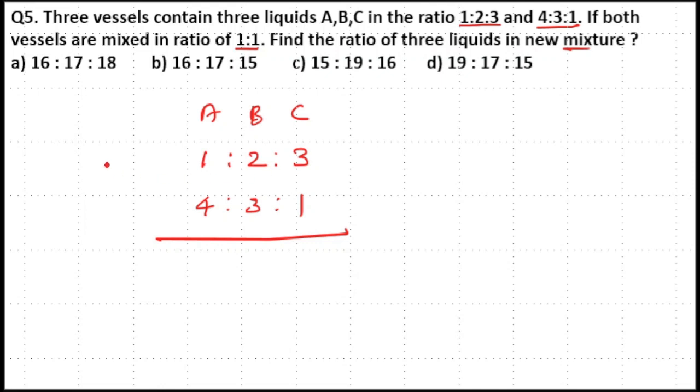1 plus 2 plus 3 is equal to 6 parts. 4 plus 3 plus 1 equals 8 parts. First vessel 6 parts, second vessel 8 parts and both vessels are mixed in 1 is to 1 ratio. So multiply 1 and 1 above and below.